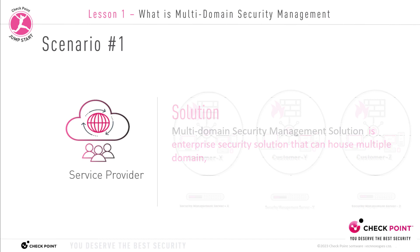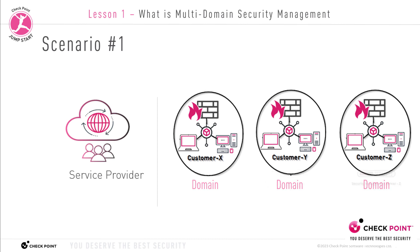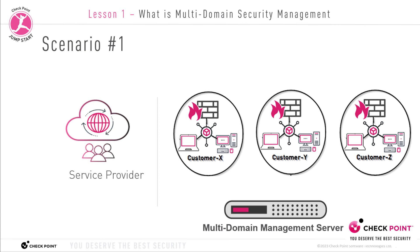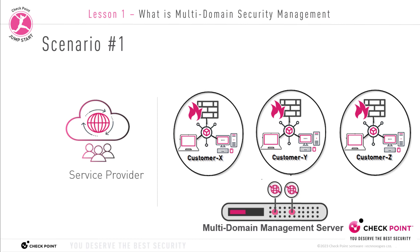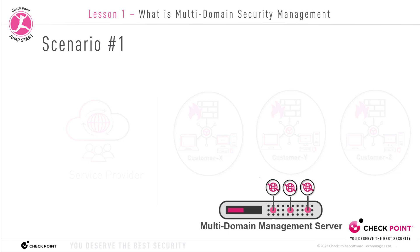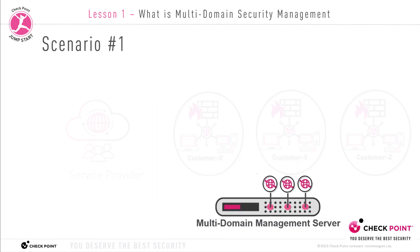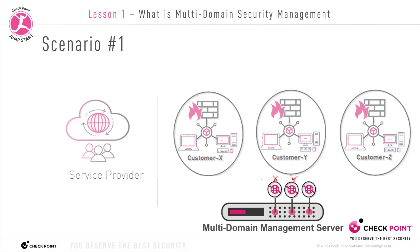Each domain will be a separate company. In our first scenario, a better solution is to replace three separate Security Management Servers with one single Multi-Domain Security Management Server. Each domain will be stored in a separate container that manages a single customer, and each customer will only be able to view and manage their own domain, their own data, and their own information. Here we're talking about a high-end Checkpoint appliance that can run the Multi-Domain Security Management Solution software. On this appliance, we create three separate domains, one for each customer — that's why we call it a Multi-Tenant solution.